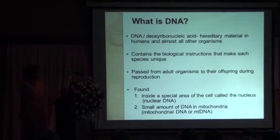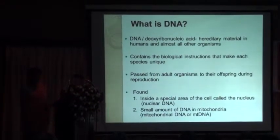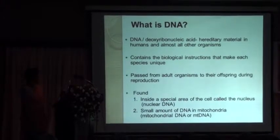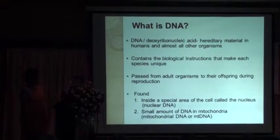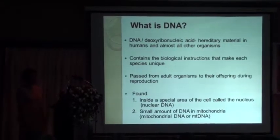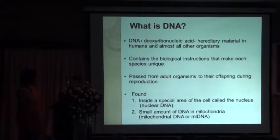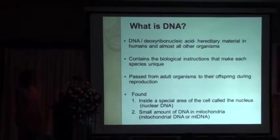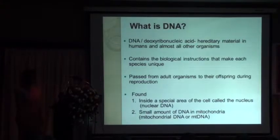This DNA is passed from adult organisms to their offspring during reproduction. There are two types of DNA: nuclear DNA, and also we get a small amount of mitochondrial DNA.